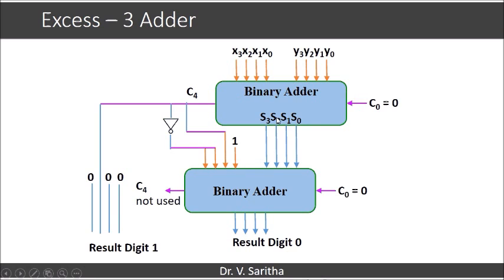Initially, this is the intermediate result. So when C4, as we have seen in the previous slide, when C4 is equal to 1, then we are going to add 3. If C4 is equal to 1, what happens? This will become 1 and this will become 00. So here it is 0011. So adding 3.